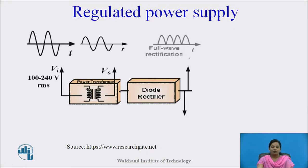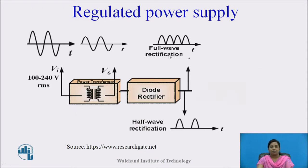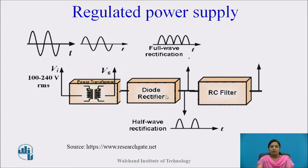There are basically two rectifiers: full wave rectifier and half wave rectifier. In a full wave rectifier, the complete cycle of AC signal is converted into pulsating DC. In a half wave rectifier, only half cycle of the input AC signal is converted into pulsating DC. The output of the rectifier is not pure DC — it consists of ripples. These ripples are removed by using filter circuits such as capacitor filter, pipe filter, and choke filter.